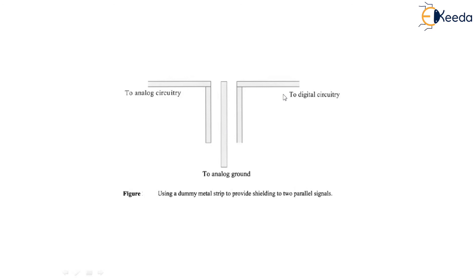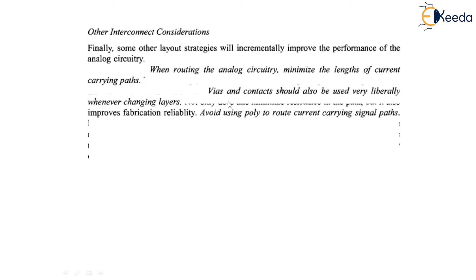The final consideration is interconnect. Some layout strategies will incrementally improve performance of the analog circuitry. First, when routing analog circuitry, minimize the length of current-carrying paths because they are very sensitive to noise. Second, wires or contacts should be used liberally whenever changing layers — contacts or vias should be used more frequently at all possible paths. Third, avoid using polysilicon to route current-carrying signal paths because polysilicon has higher resistance.